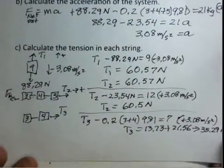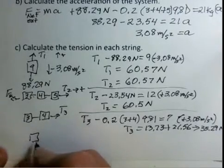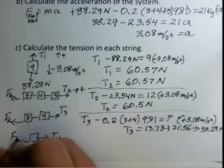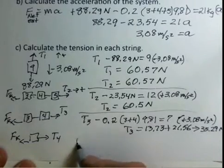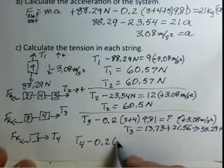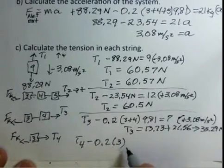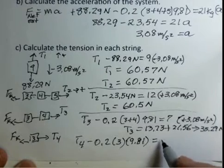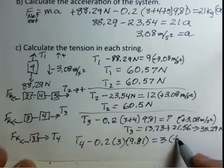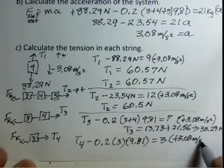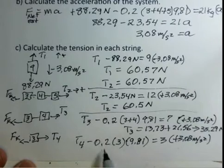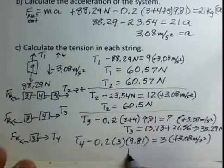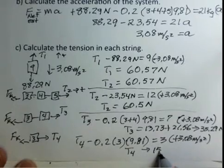For T4, the easiest system is just the 3 kilogram object. T4 to the right minus kinetic friction (0.2 times 3 times 9.81) equals 3 kilograms times +3.08 m/s². Calculating the friction, adding to both sides, and adding 3 times 3.08 gives T4 = 15.13 newtons.